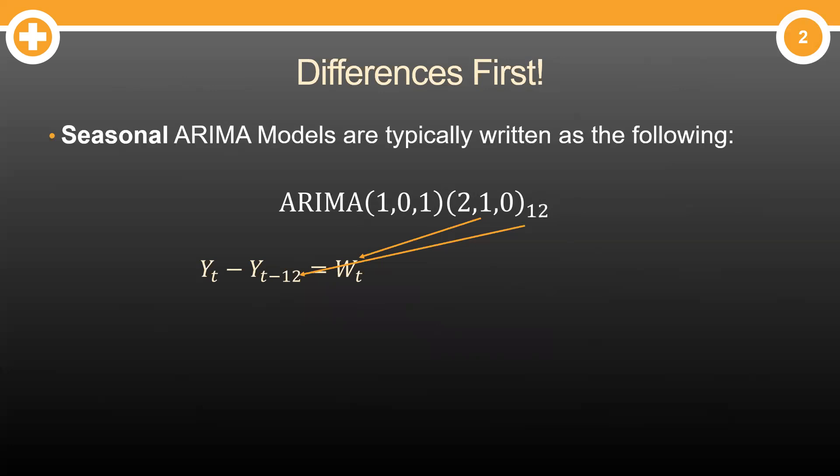Y_t minus Y_t minus 12. So that means we lag back 12 time periods for our difference to get to W_t. No little d differences for us here, so differences are done.